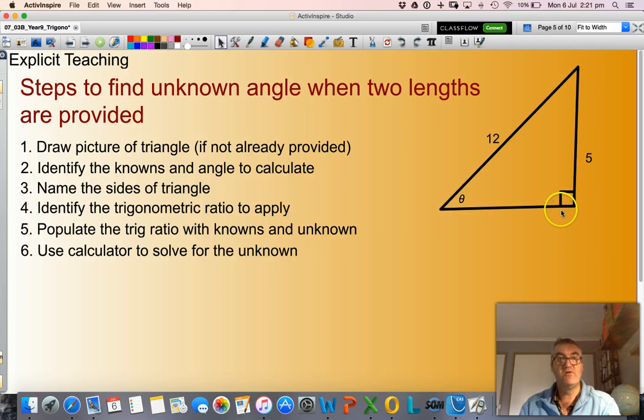I need to identify the unknowns and where the angle is that I'm calculating. Here is my angle that I'm looking to calculate. Here is a known side length of 12. Another known side length of 5.